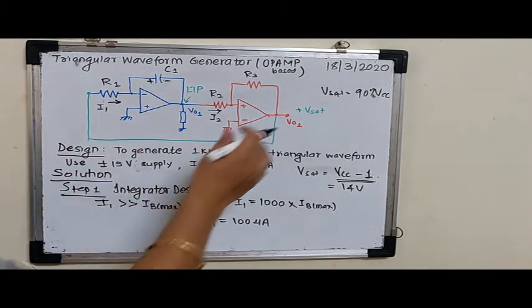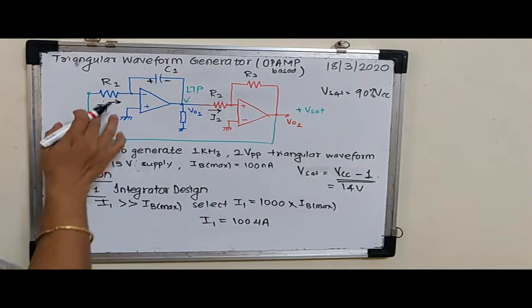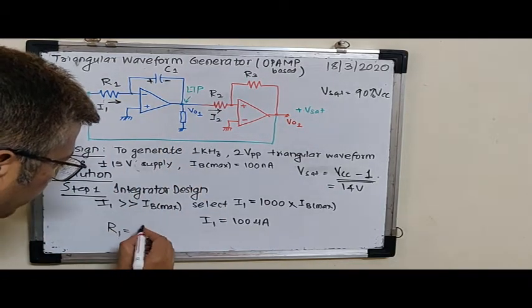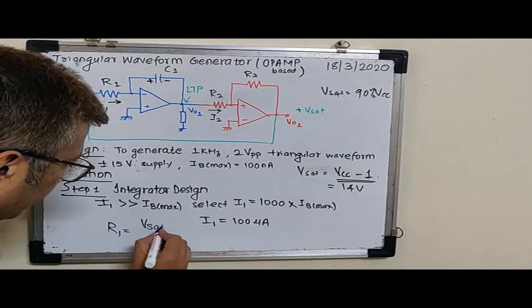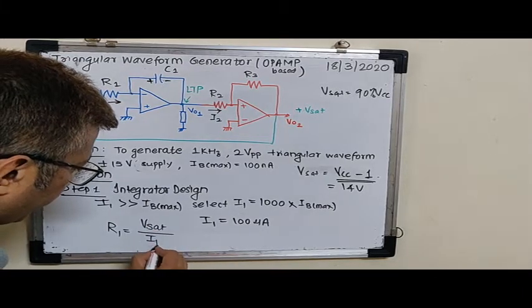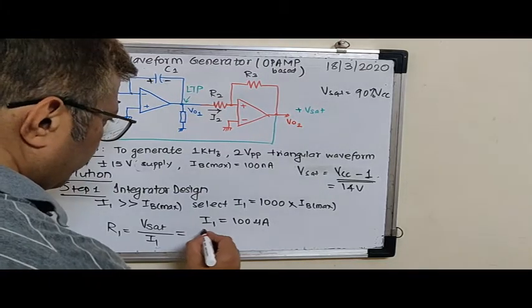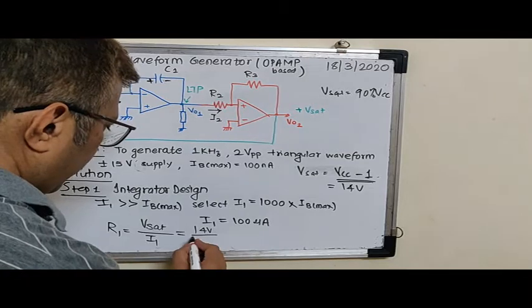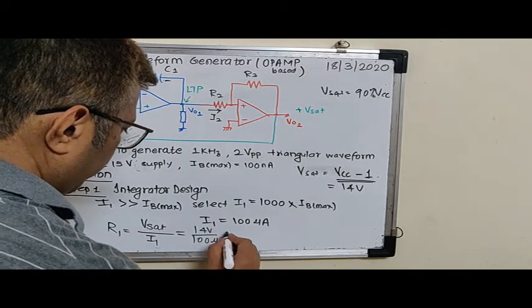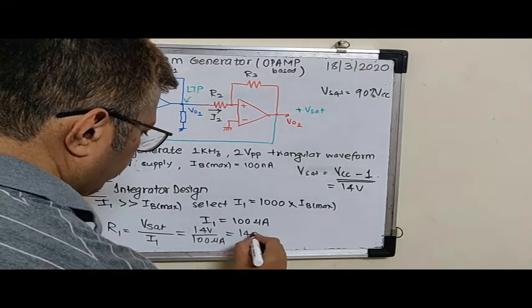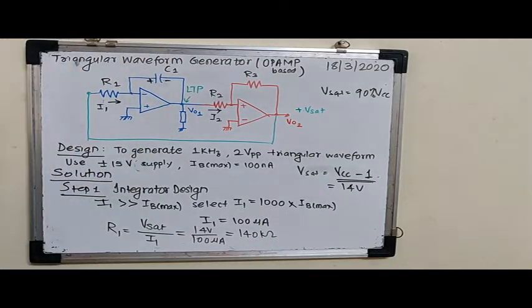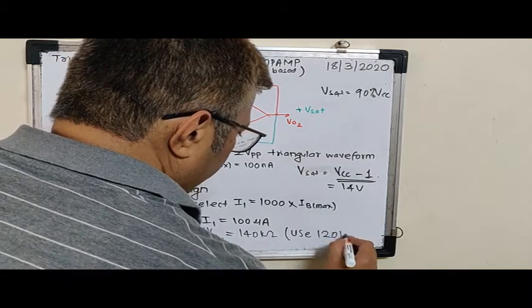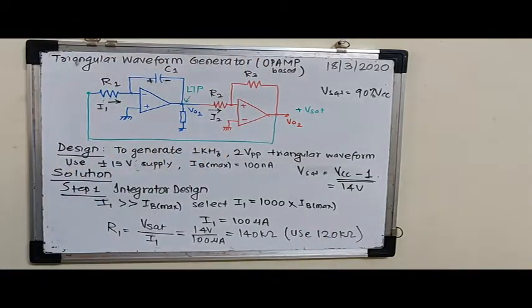So voltage across R1 is Vsat. Current flowing through R1 is I1. It is easy for us to find out R1. So R1 happens to be Vsat divided by I1. That is equal to 14 volts divided by 100 microamperes. This turns out to be 140 kΩ. Now 140 kΩ is not a standard value, so we will use a 120 kΩ resistor instead.